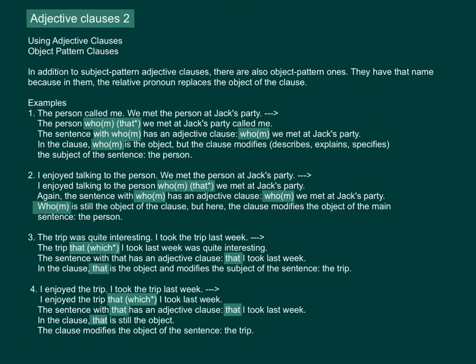Example 2: 'I enjoyed talking to the person whom or that we met at Jack's party.' Again, the sentence with who or whom has an adjective clause. Who or whom is still the object of the clause, but here the clause modifies the object of the main sentence — 'the person.'